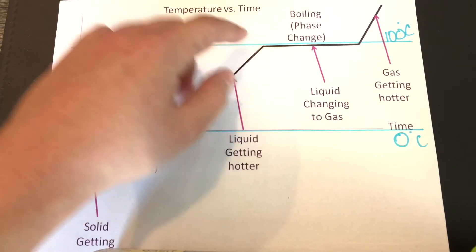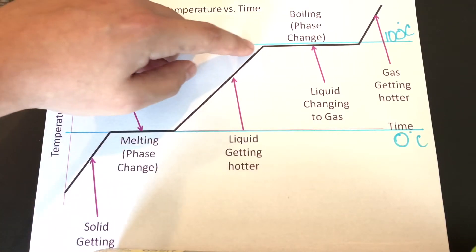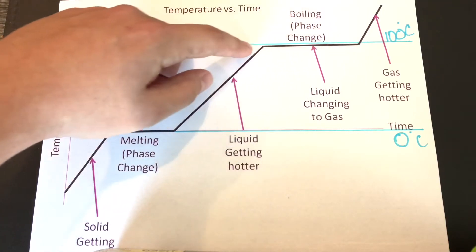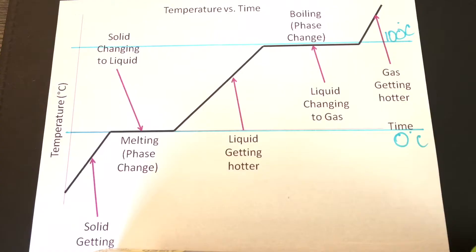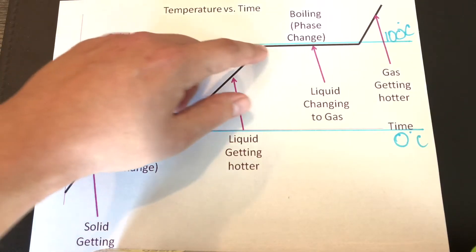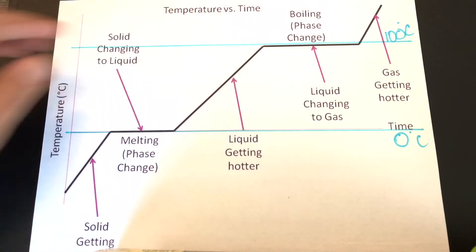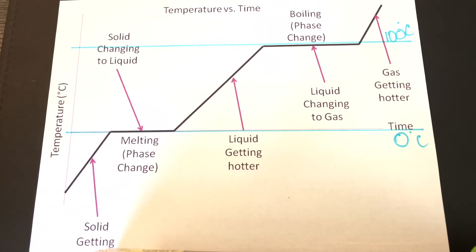This is where the liquid is changing to a gas. At this point we're at a hundred degrees Celsius. And across this plane there is no delta T, there is no change in temperature. And then you would reach your final plane where it would increase and eventually go off into a supercritical fluid.